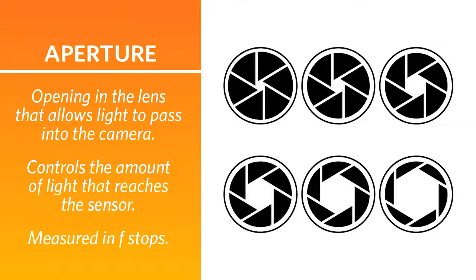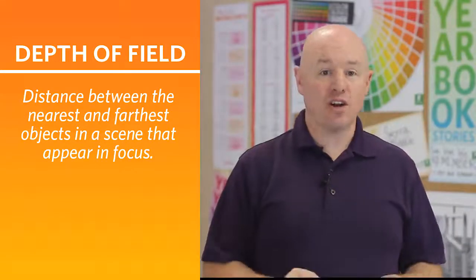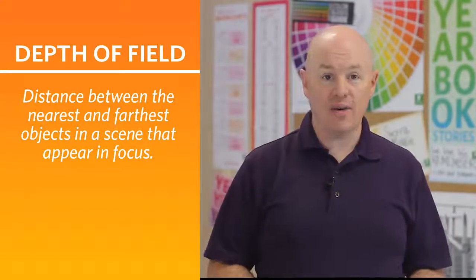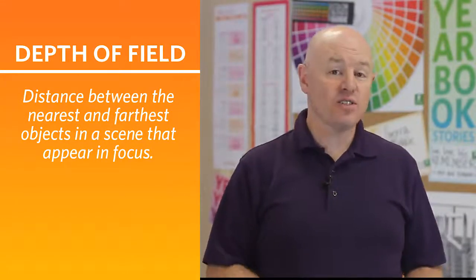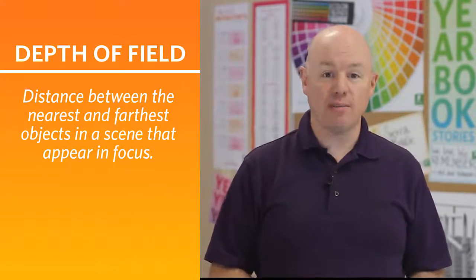Aperture is the size of the opening within your lens that controls the amount of light that reaches the sensor in the camera. Aperture is measured in f-stops. A larger opening will allow more light through in a given amount of time. The trade-off of changing your aperture value is that it also impacts your depth of field.